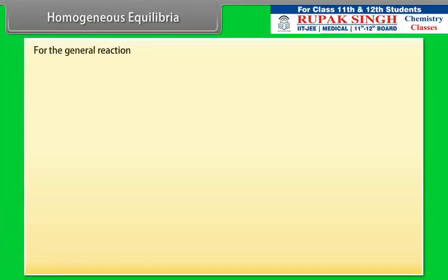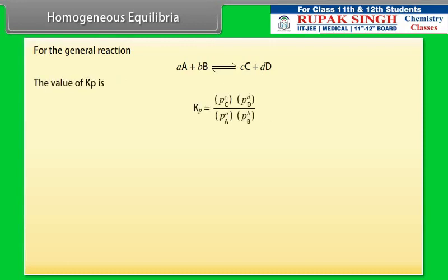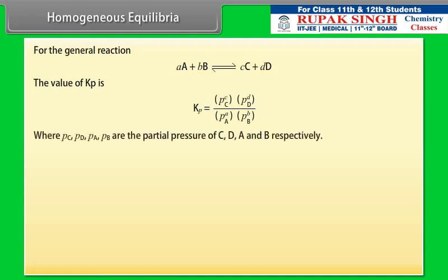For the general reaction, the value of Kp is expressed in terms of partial pressures, where Pc, Pd, Pa, and Pb are the partial pressures of C, D, A, and B respectively.